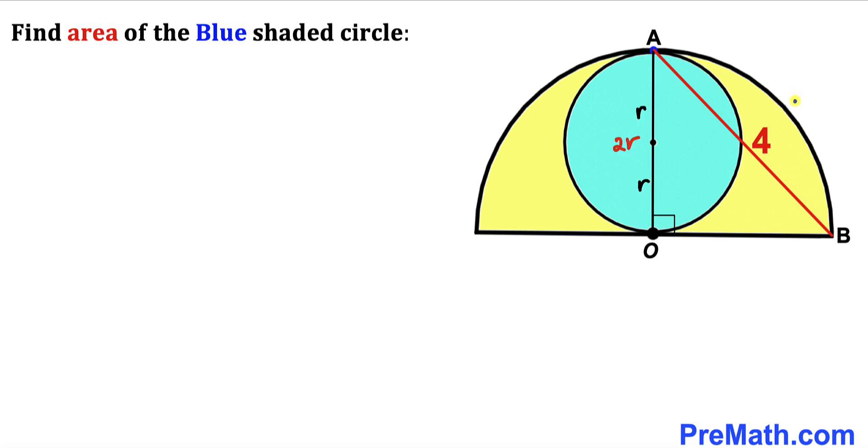And now let's focus on this semicircle. We can see that this AO is the radius of this semicircle.